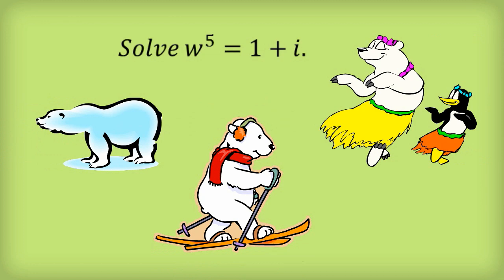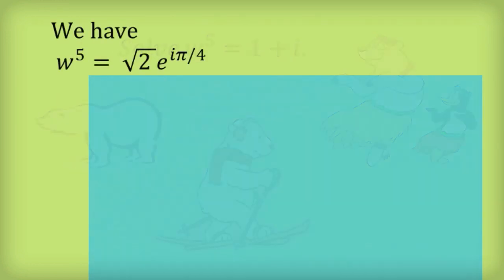Now, if you don't know how to convert into polar form, then you should stop this video and go watch another video, because you really need to be able to do that for this sort of question. So let's go ahead and express 1 plus i as the square root of 2 times e to the power of i pi divided by 4. That gives us the first line in the solution.